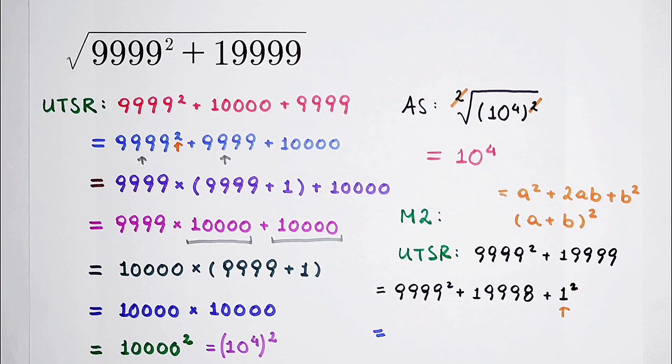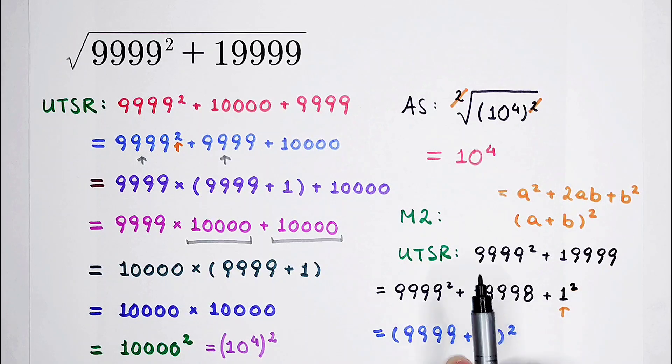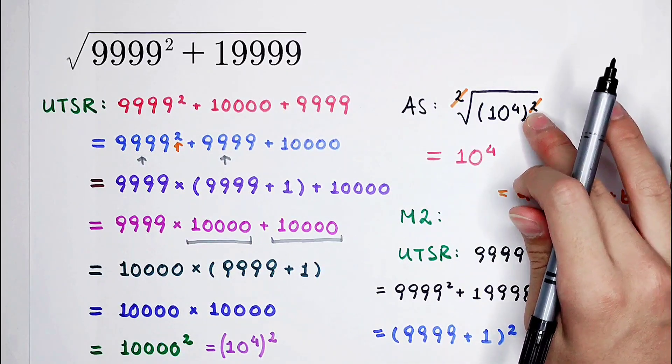So the answer is 9999 and then plus 1, all squared, 10000 squared. And in the bracket, it is 10000. So the answer is square root of 10000 squared. Exactly, it is actually this. So the answer is 10000, or 10 to the power 4.